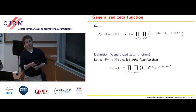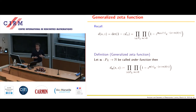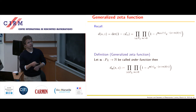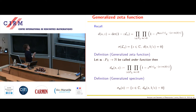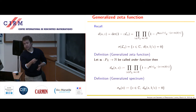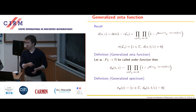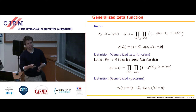Instead of working with a different Poincaré section, we can start from the double product and simply replace the order function. We need some map which takes a primitive geodesic and associates a positive integer — we call it an order function on the primitive geodesics. Then we can write down the double product with this generalized order function, and one can show that this converges and can be analytically continued. Given such an order function, we have a generalized theta function. The generalized spectrum is by definition the set of all s values such that this generalized theta function at (s, 1/z) vanishes.